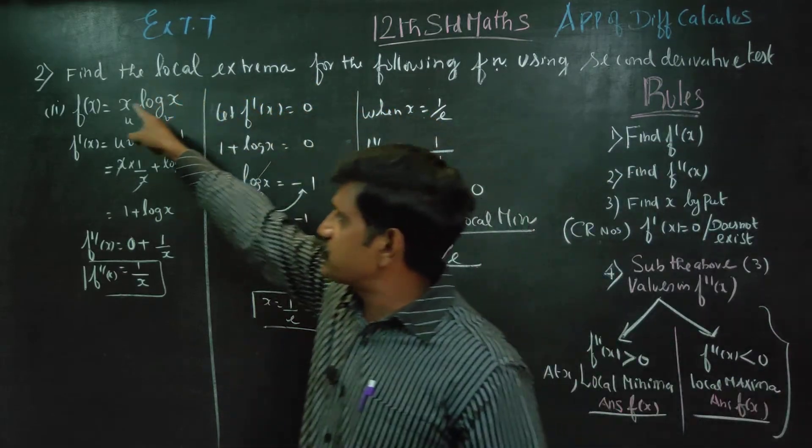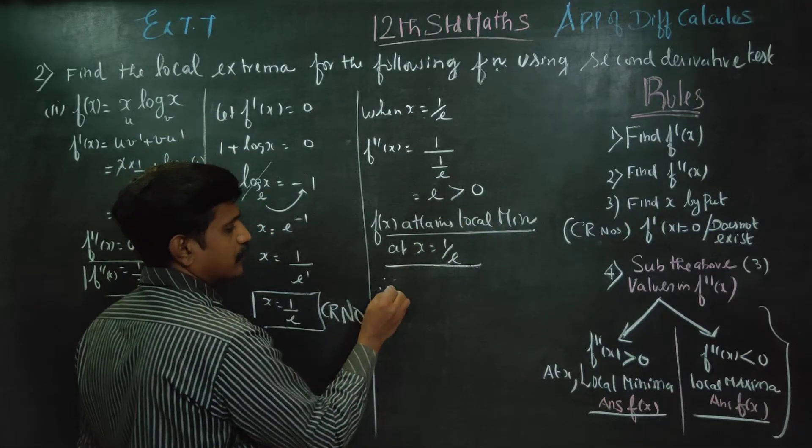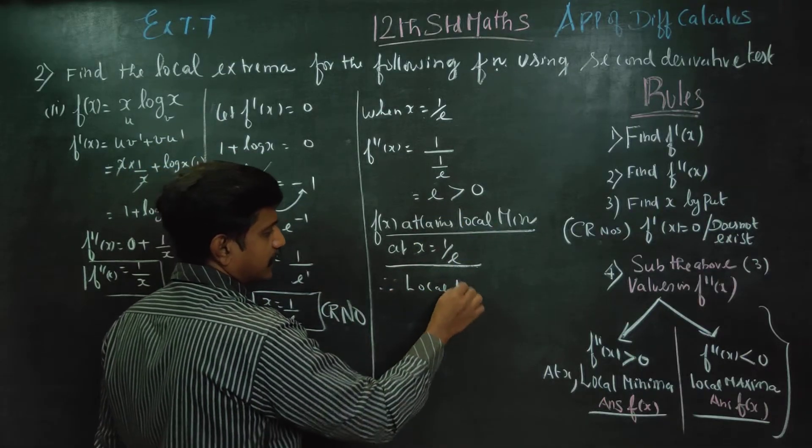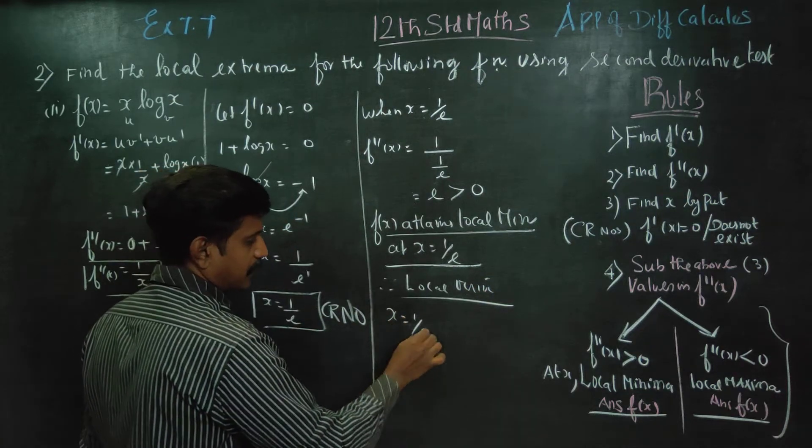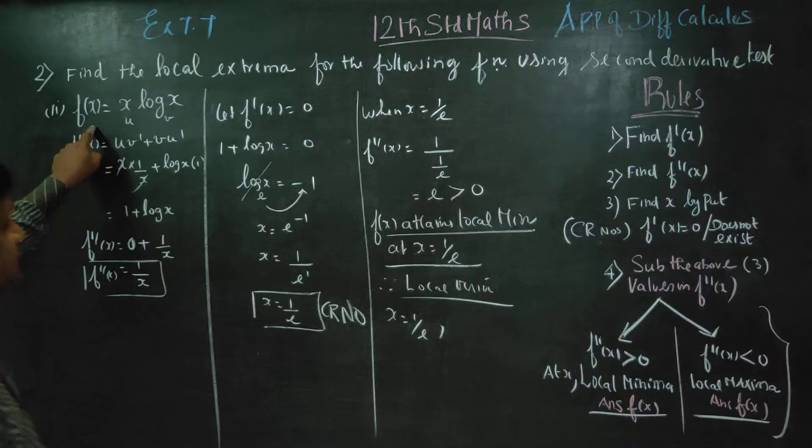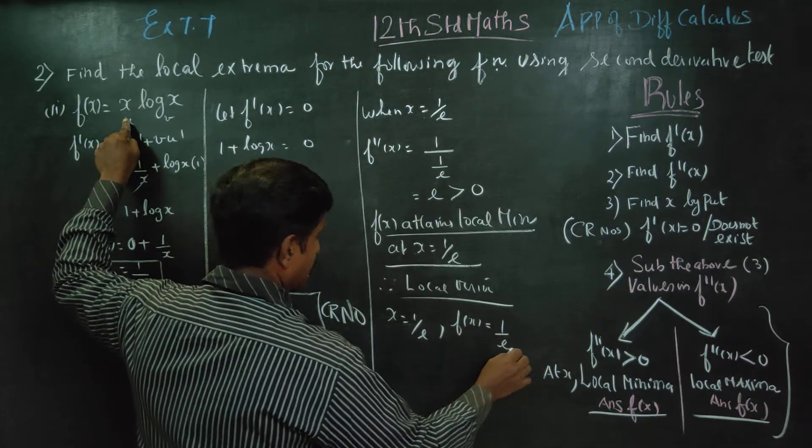I will substitute to find the local minimum value. Finally, when x = 1/e, f(x) = (1/e) log(1/e).